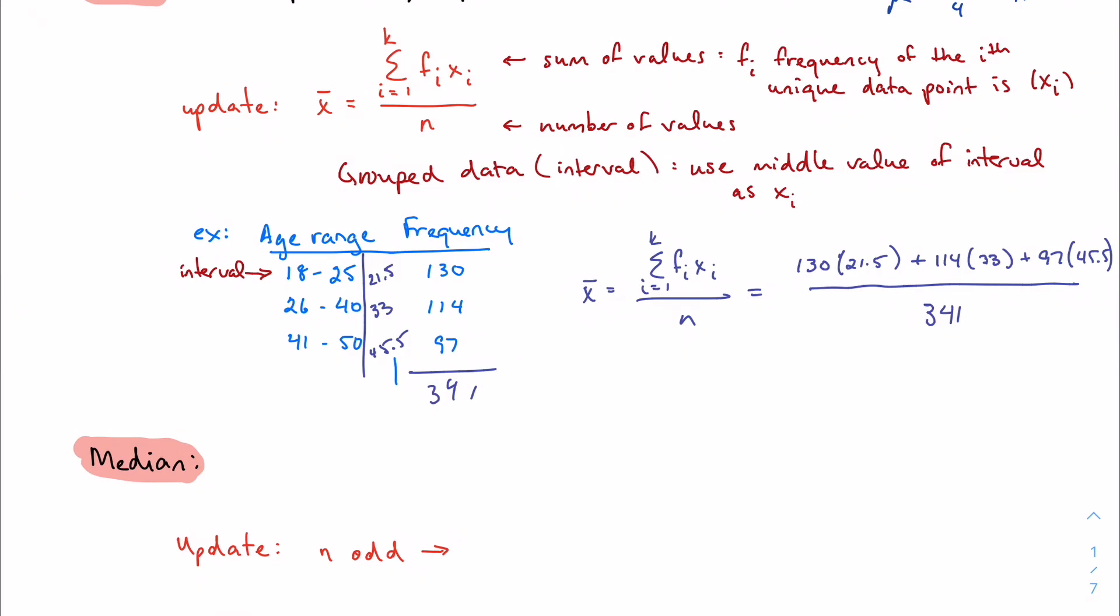So all I'm going to do is I'm going to multiply all of my frequencies times their respective value. So I have 130 times 21.5, plus 114 times 33, and then I have 97 times 45 and a half. I'm going to divide by the total number of values, which is going to be 341. So whatever that works out to be on my calculator is going to be my mean. And my average here, my mean here is 32.2.